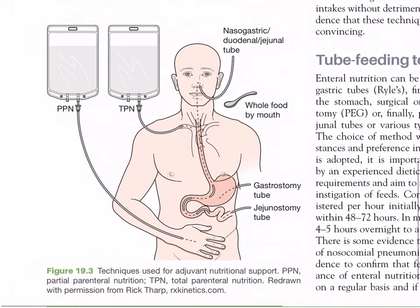Figure 19.3 illustrates techniques used for adjuvant nutritional support: partial parenteral nutrition (PPN) via peripheral line, total parenteral nutrition (TPN) via central line, nasogastric or duodenal or jejunal tube, whole food by mouth, gastrostomy tube, and jejunostomy tube.